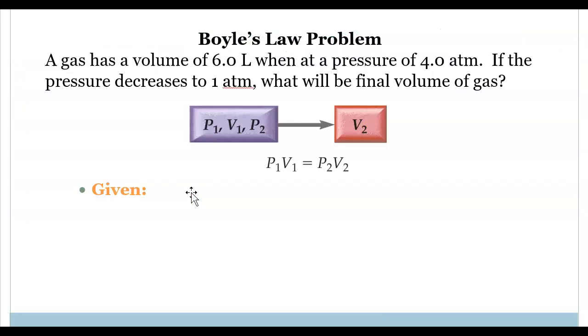If we look at a practice problem, a gas has a volume of 6 liters with the pressure at 4 atmospheres. If the pressure decreases to 1 atmosphere, what will the final volume of the gas be? I always think it's good to predict what you think the answer should be. Our V1 is 6.0 liters, our P1 is 4.0 atmospheres, our P2 is 1.0 atmospheres, and we're solving for V2.